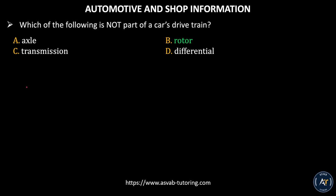The last question: which of the following is not part of a car's drive train? Option A, axle. Option B, rotor. Option C, transmission. Option D, differential. The correct answer is Option B, rotor.